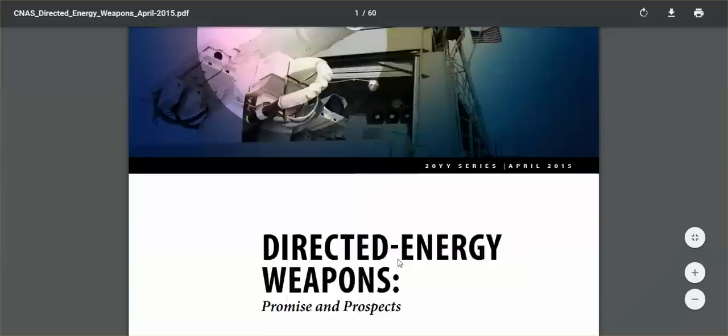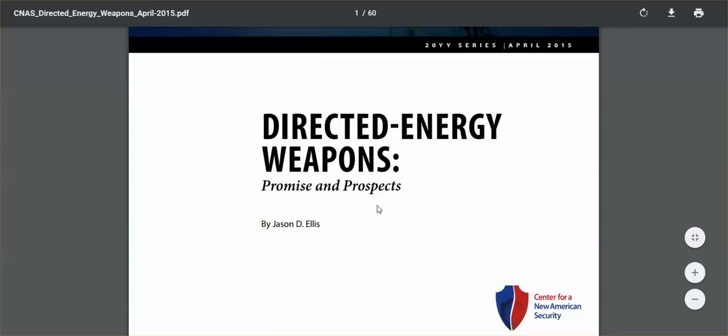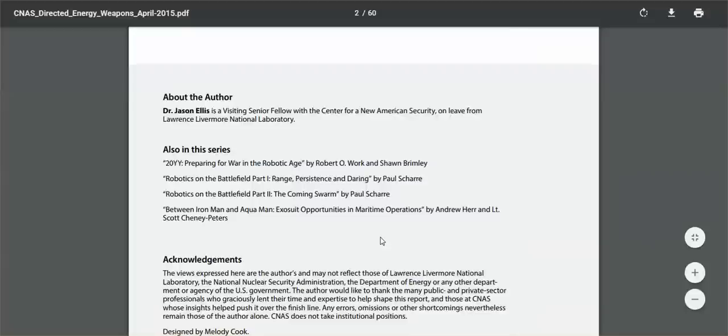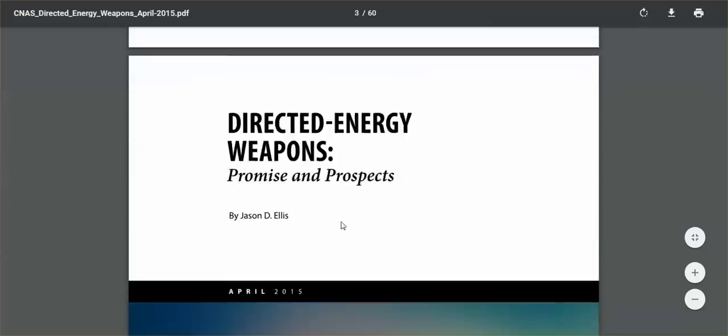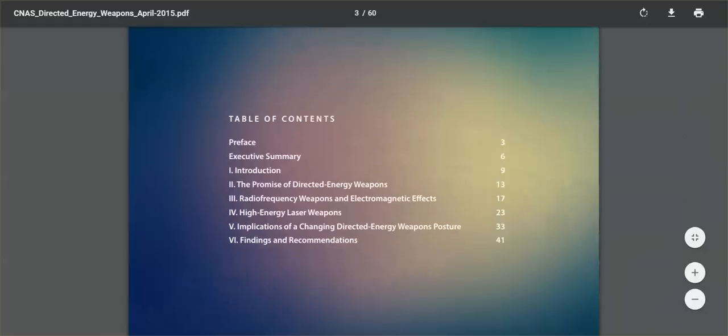What is this? This is Directed Energy Weapons Promise and Prospects. The table of contents: Radio Frequency Weapons and Electromagnetic Effects. Why am I including this? Because this here is a weapon. It is a weapon. Your iPhones, your smartphones, they are weapons.